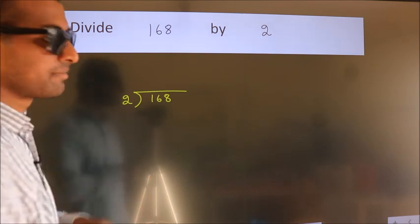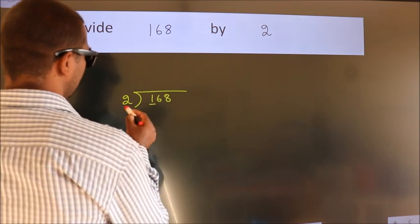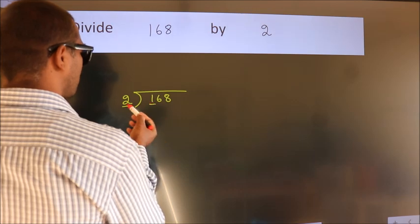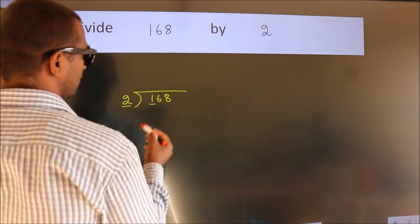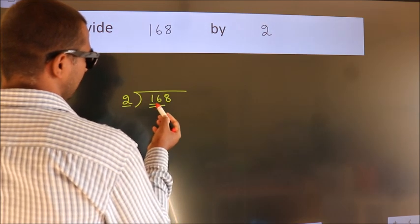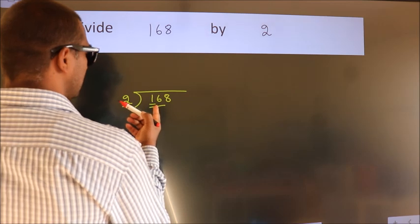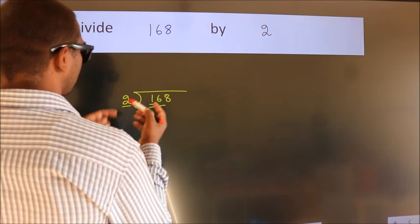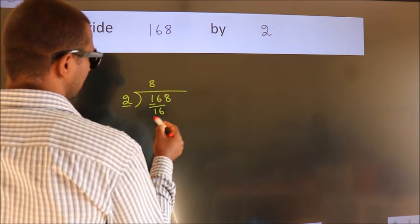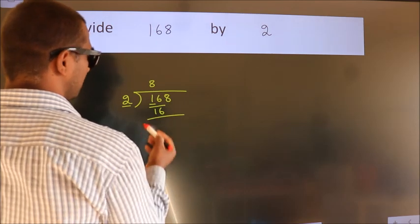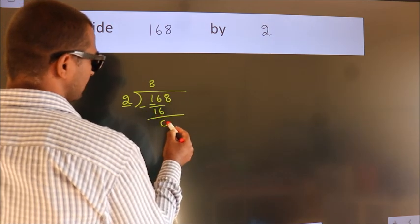Next, here we have 1, here 2. 1 is smaller than 2, so we should take 2 numbers, 16. When do we get 16? In the 2 table, 2 eights are 16. Now we should subtract. We get 0.